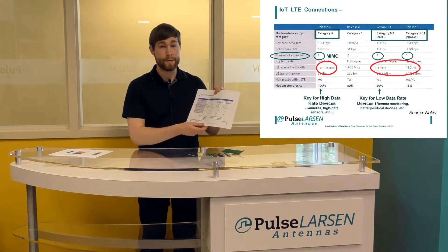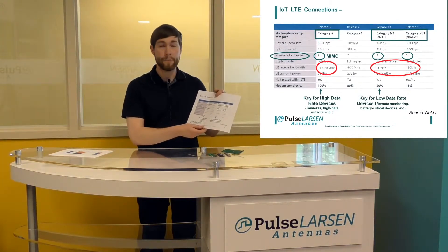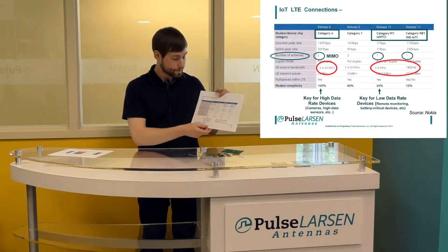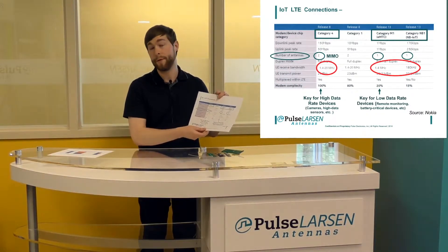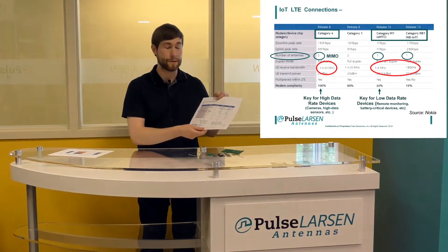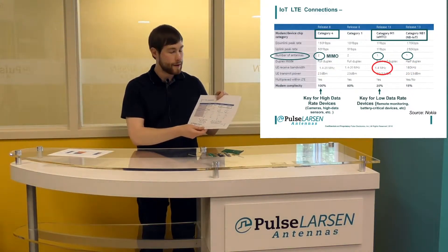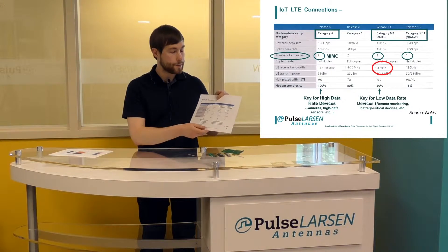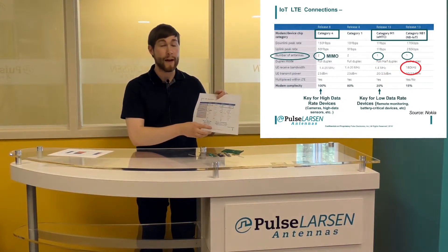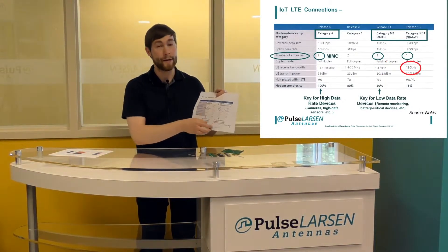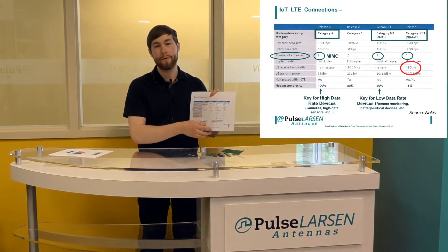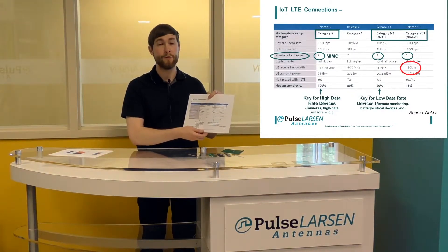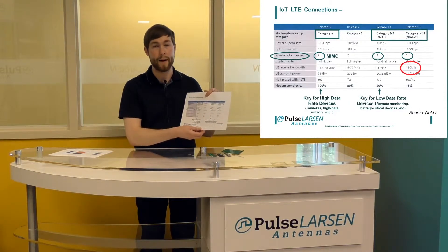Another very important difference is the actual frequency bandwidth used when sending or receiving data. LTE Cat 4 can use up to 20 MHz for these applications, while M1 and NB-IoT use much narrower bandwidth. Category M1 uses 1.4 MHz while NB-IoT uses only 180 kHz. This much narrower frequency bandwidth actually makes frequency duplexing much easier when you have many devices trying to broadcast in a small environment.